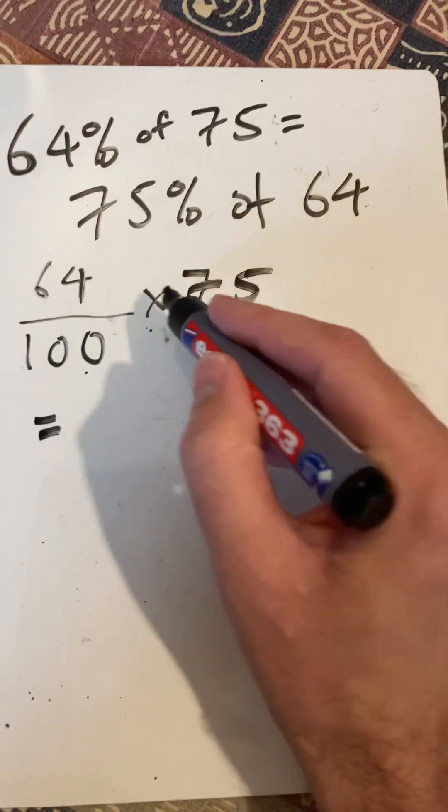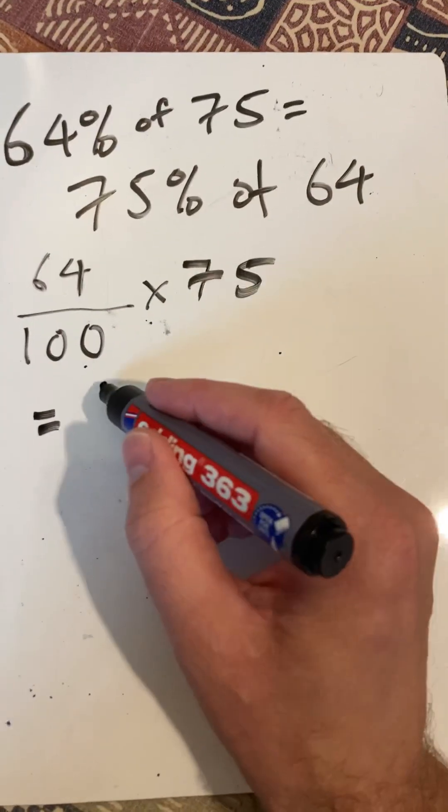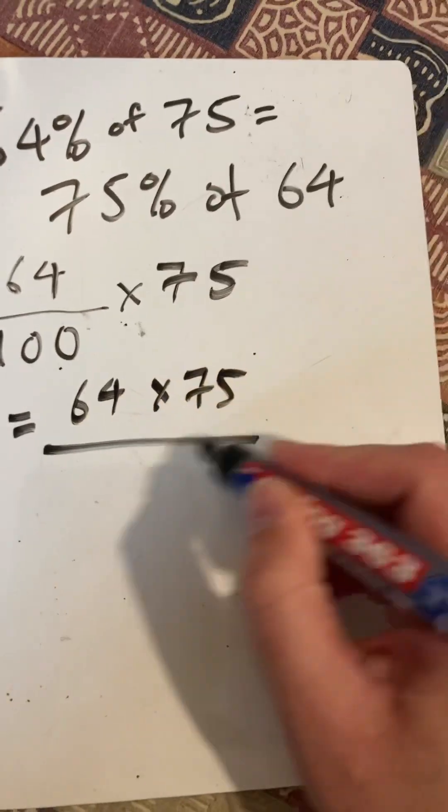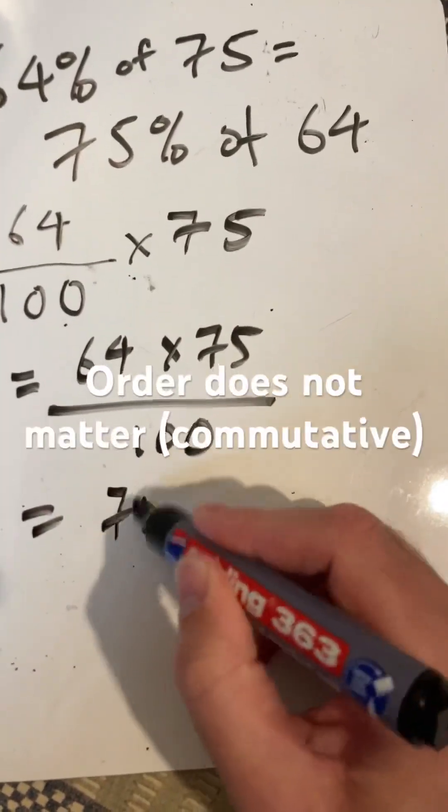But remember, with multiplication you can do those in any order. So that's the same as 64 times 75 all over 100. What I can actually do is swap those numbers around.